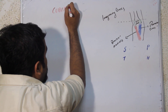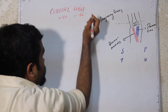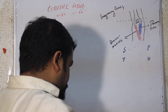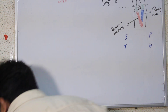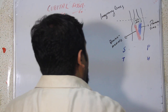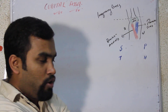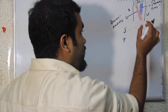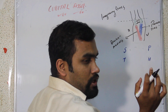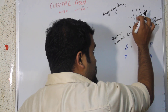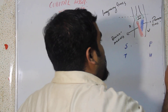Imagine this as our humerus. On this side we have the radius bone, and on this side we have the ulna. The radius bone is on the lateral side, and this is the ulna. The humerus has a lateral epicondyle and a medial epicondyle. The muscle here is known as the brachioradialis muscle.